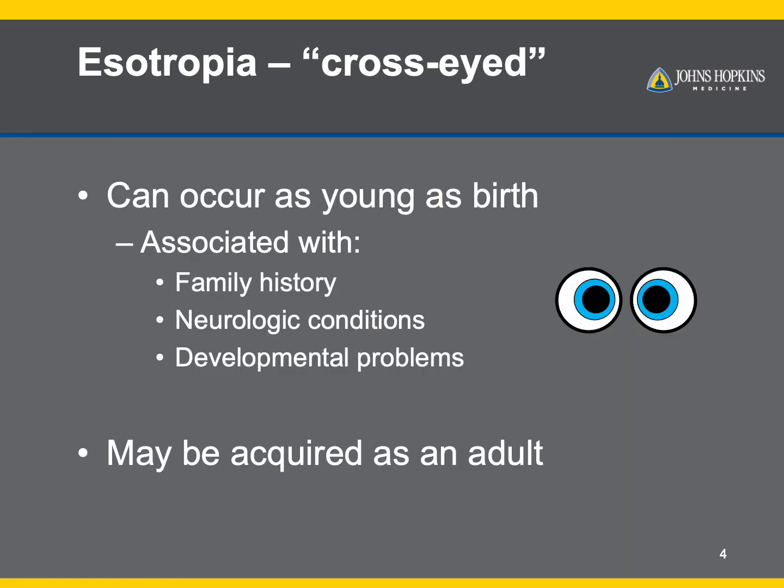If a child's eye is truly crossed, this is known as esotropia. It may present at birth or around age 2 to 4 as a child's natural eye prescription changes over time. Some children are more susceptible to this problem than others, such as if they have a family history of the problem, a neurologic condition, or developmental problem. Certain conditions can also cause it to happen in adults, such as strokes.